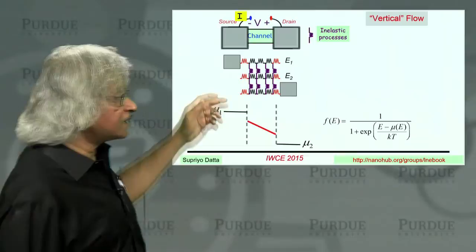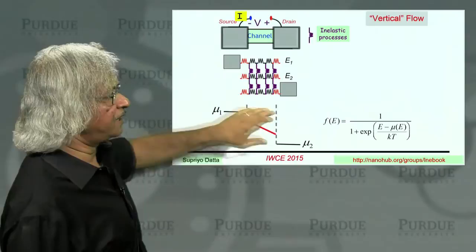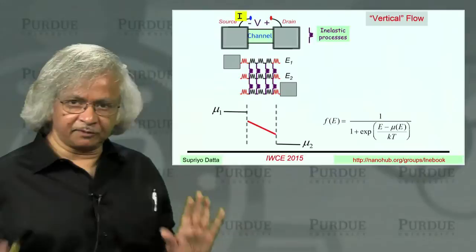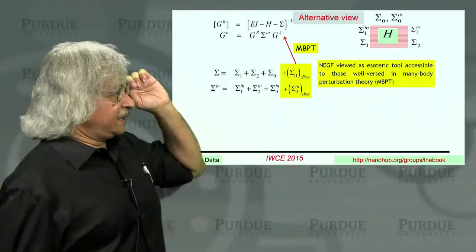So, in general, you see, dissipative processes can be important. But my overall point is just this, that the general mindset is that many body interactions are basic to understanding resistance. And so, any derivation of these equations must start from many body theory. And the net result is people view this NEGF as being an esoteric tool that is accessible only to those who are well-versed in this many body perturbation theory.